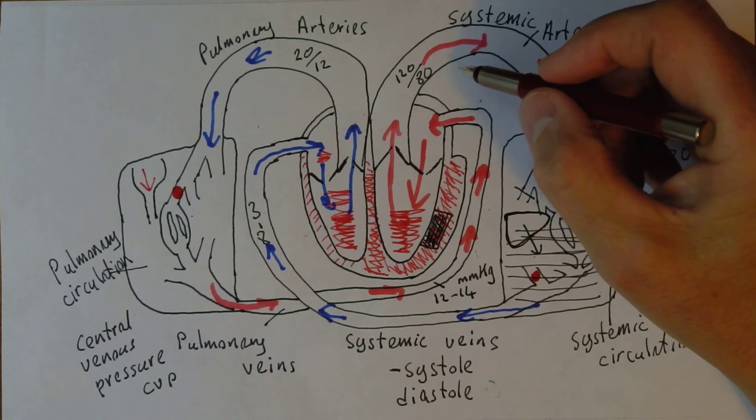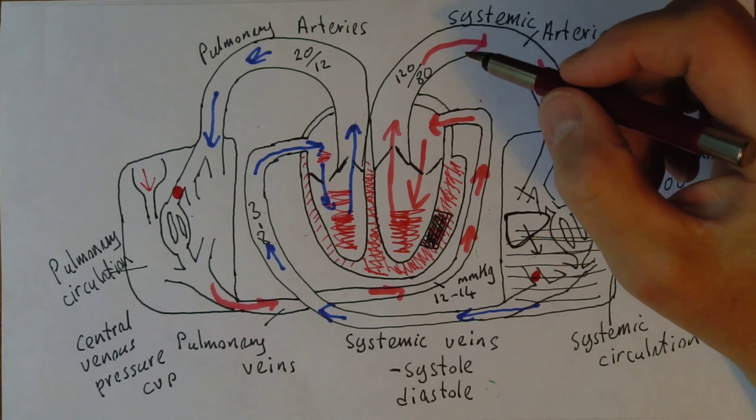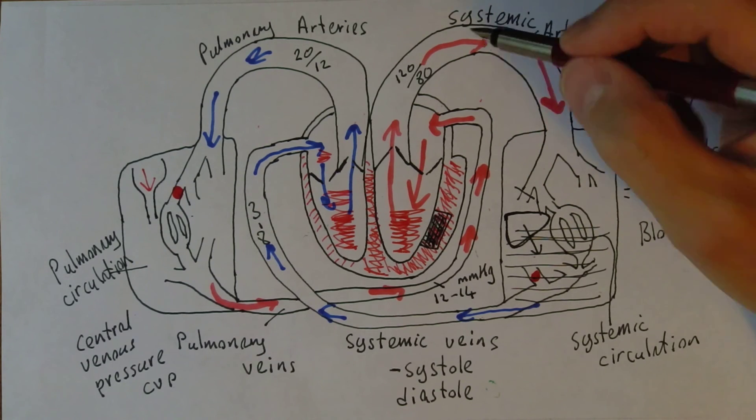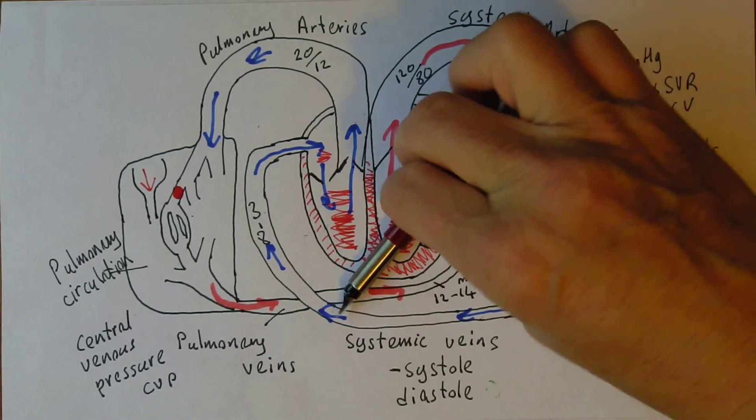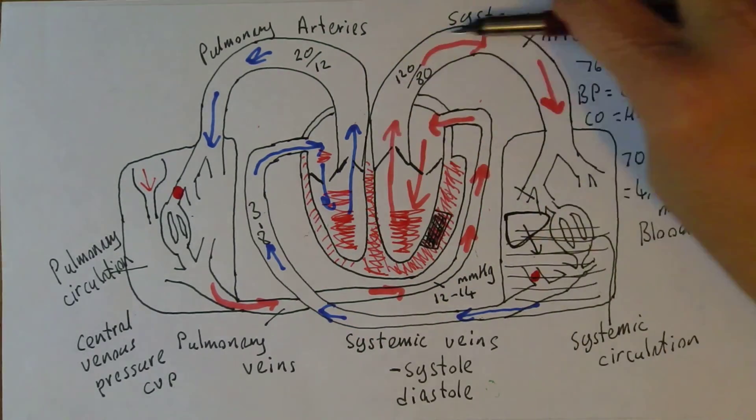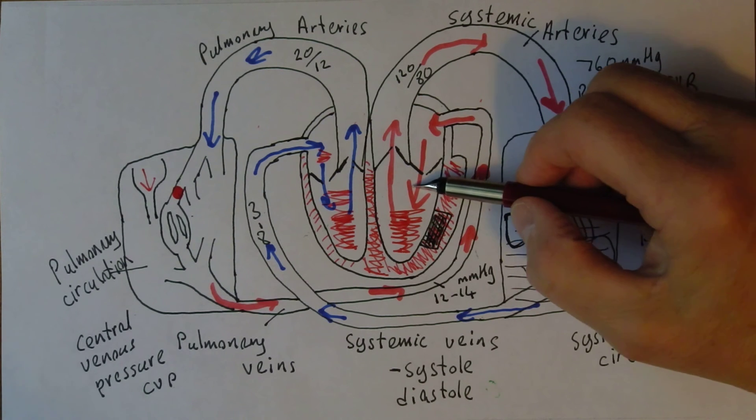Anaemia is a surprisingly common problem. Do be aware of the risk of anaemia in your population. Anaemia affects something like 20 percent of the world's population. And what that means is that the left ventricle has to work harder over a long period of time to get the blood circulating to get the oxygen around to the tissues of the body. It's another obligatory high output condition.